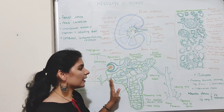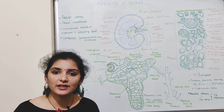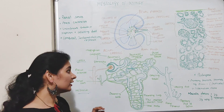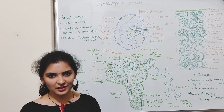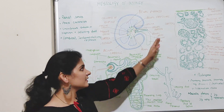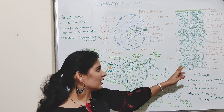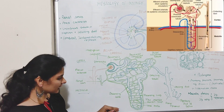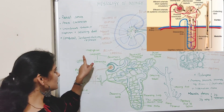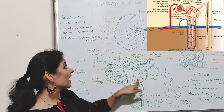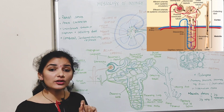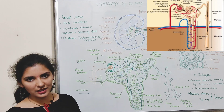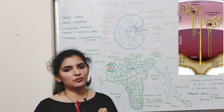Since the major portion of the kidney consists of different parts of the nephron, studying the histology of the kidney is essentially studying the histology of the nephron. The nephron mainly consists of two parts: the Malpighian corpuscles and the associated renal tubules. Malpighian corpuscles or renal corpuscles are present in the cortex region, and the associated renal tubules extend into the medulla.